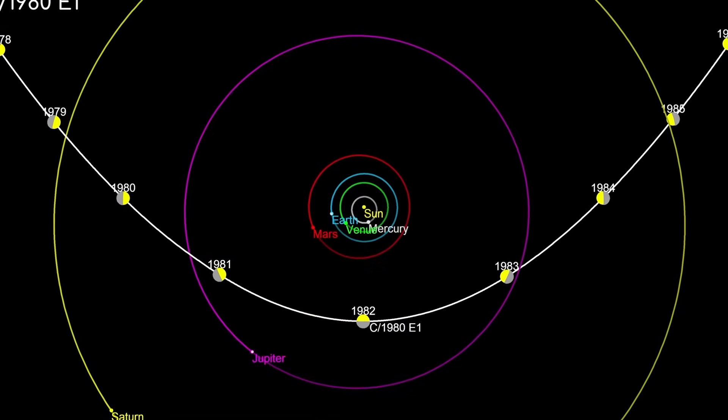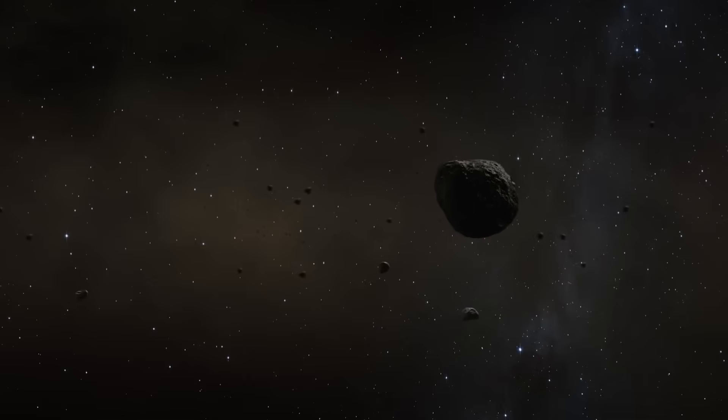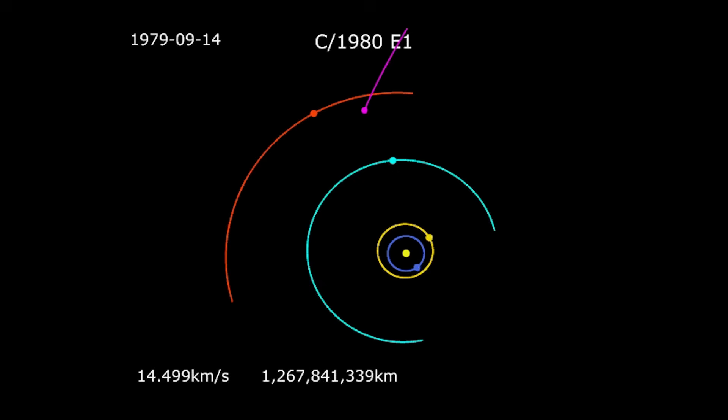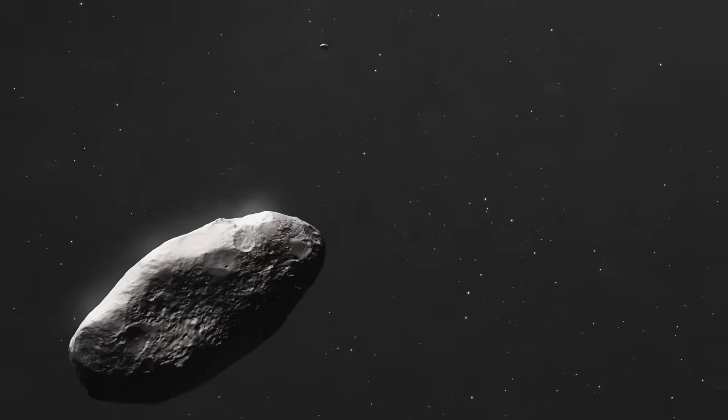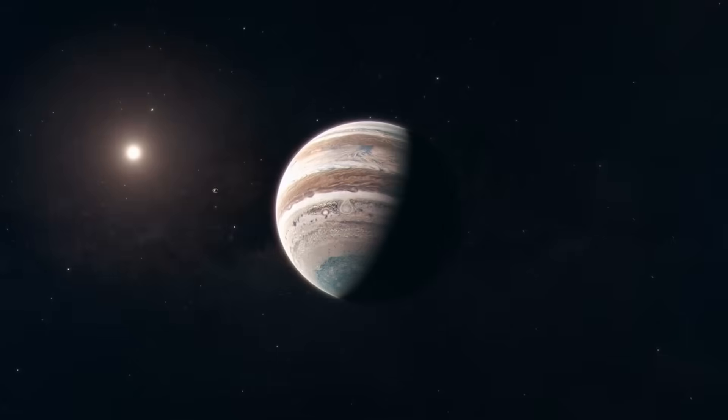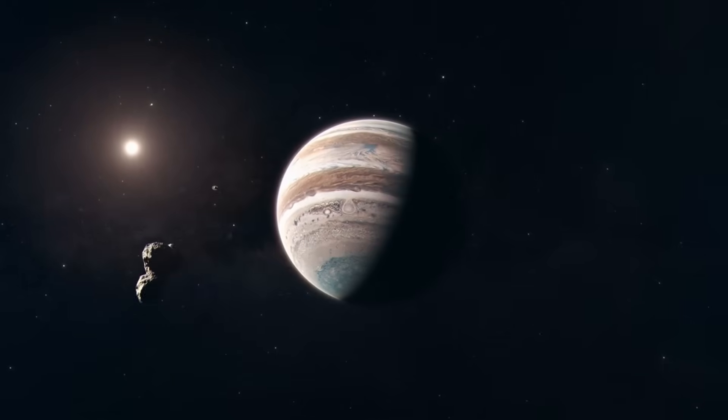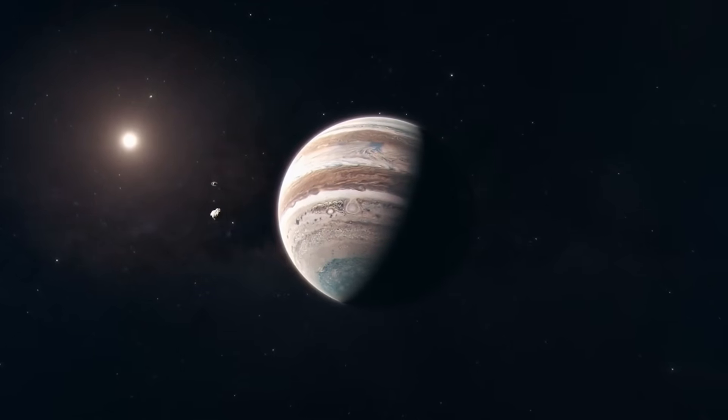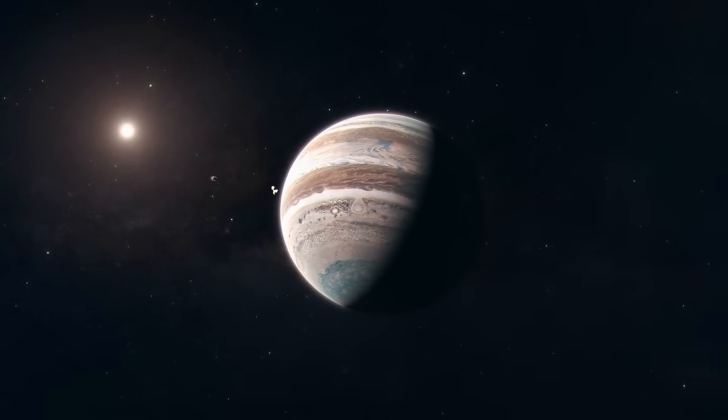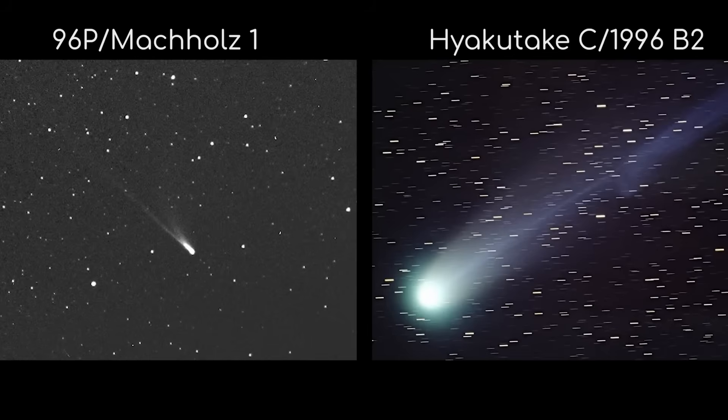Take C-1980 E1, for example. Originally from our solar system, it got too close to Jupiter during its last orbit and was slingshotted out. Now, it's on a one-way trip to interstellar space. The opposite has happened too. Some objects may have come from other stars, only to be slowed down and trapped by Jupiter's gravity. Astronomers suspect Macholtz 1 and Hayakutake C-1996-B2 are captured interstellar comets, based on their unusual orbits and odd chemical signatures.